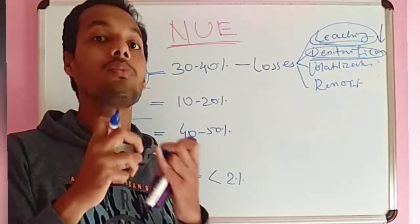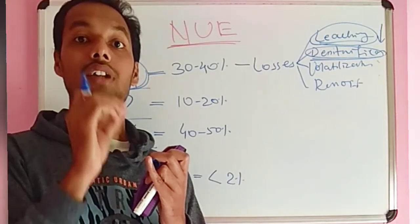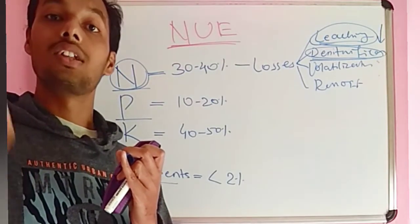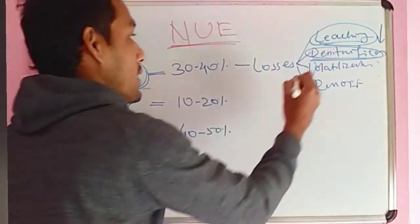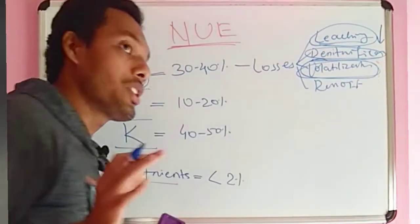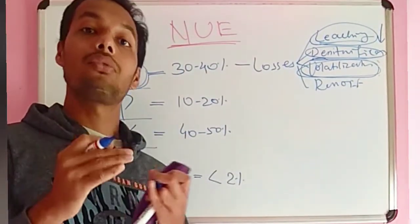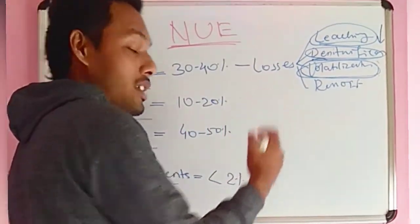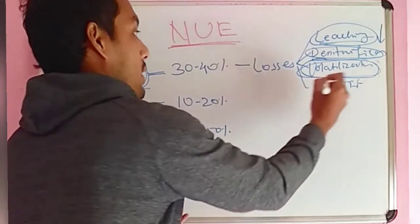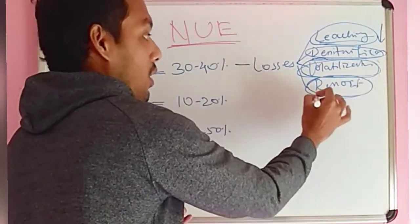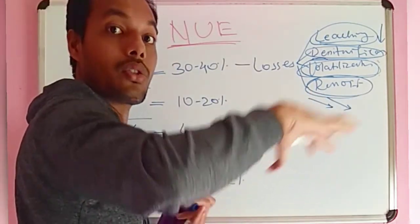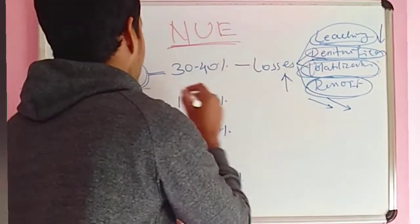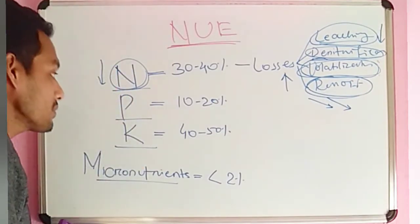Denitrification is a microbial process. When the soil is submerged, microbes don't get oxygen, so they consume the terminal oxygen available in nitrate, and that nitrate is converted into dinitrogen or nitrous oxide — that is denitrification. Volatilization is a chemical process; temperature and alkalinity are favorable for this process, causing ammonium volatilization losses. And with runoff water, soil erodes and nutrients also erode along with it.